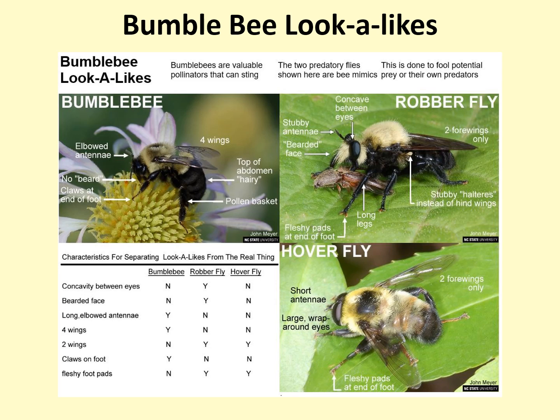Bumblebees have four wings and flies have two. Bumblebees have long, elbowed antennae and flies have short, stubby antennae. Flies have extremely large eyes and fleshy foot pads instead of claws like bumblebees. You will also notice that the color patterns on flies rarely, if ever, exactly match those of our bumblebees. The behavior of flies is also different — you will often see flies perched on leaves waiting to attack prey, while bumblebees are generally on or in flowers.